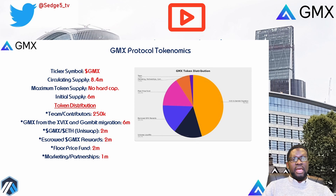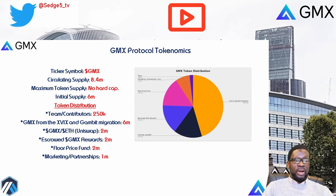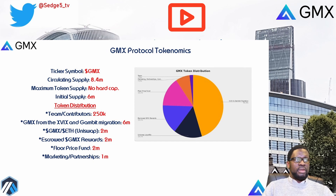Now onto token distribution. Six million GMX tokens came from the XVIX and Gambit migration, the previous incarnation of the protocol. Two million GMX were paired with Ethereum for liquidity on Uniswap. Two million GMX are reserved for vesting from escrowed GMX rewards. Two million GMX tokens are to be managed by the floor price fund. One million GMX tokens are reserved for marketing, partnerships, and community developers. And finally, 250,000 GMX tokens distributed to contributors linearly over two years.